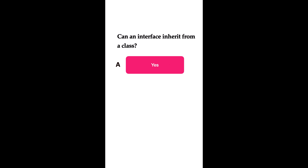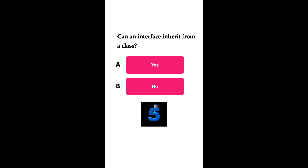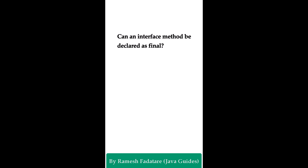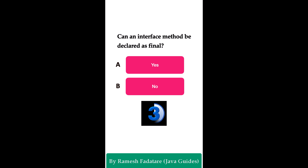Can an interface inherit from a class? Option A: yes. Option B: no. The correct answer is no. In Java, an interface cannot inherit from a class — it can only extend other interfaces. Can an interface method be declared as final? Option A: yes. Option B: no. The correct answer is no. Methods in an interface are implicitly abstract, and abstract methods cannot be final because an abstract method has no implementation. By default, interface methods are implicitly abstract.